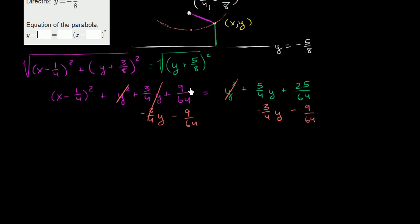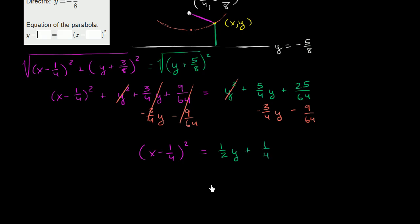The left-hand side simplifies to (x - 1/4)². That equals: 5/4 minus 3/4 is 2/4, which is 1/2, so (1/2)y. And 25/64 minus 9/64 is 16/64, which is 1/4. So we have (x - 1/4)² = (1/2)y + 1/4. We've almost got where we need to go — we just need to factor out 1/2. So this becomes (x - 1/4)² = (1/2)(y + 1/2).